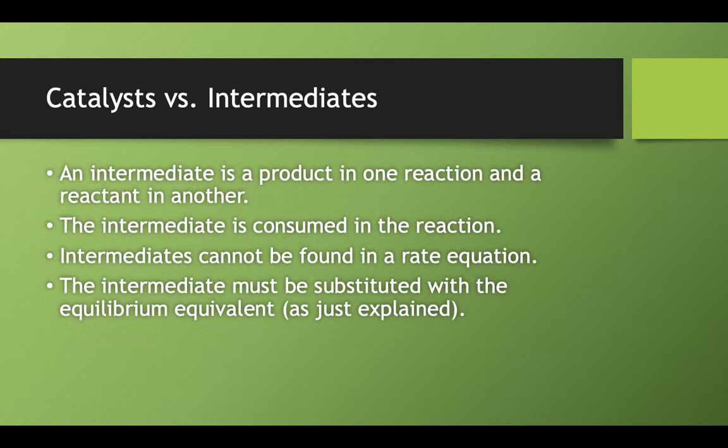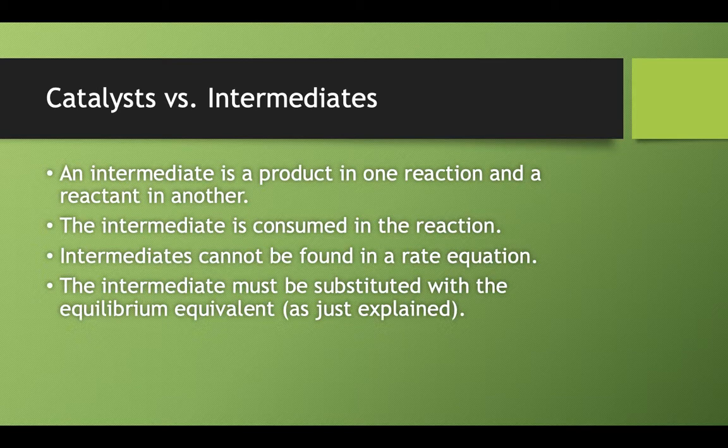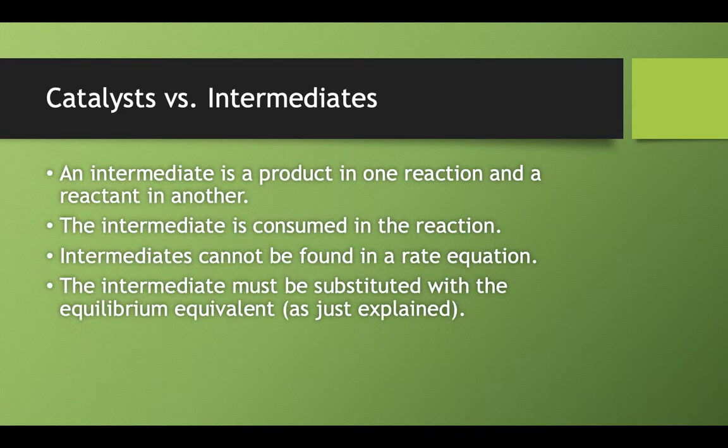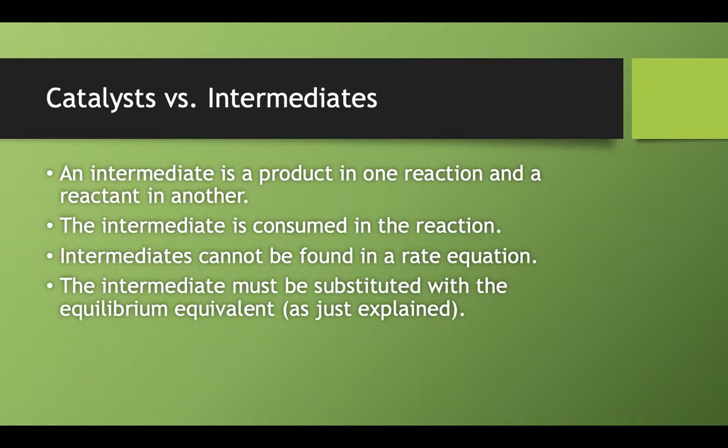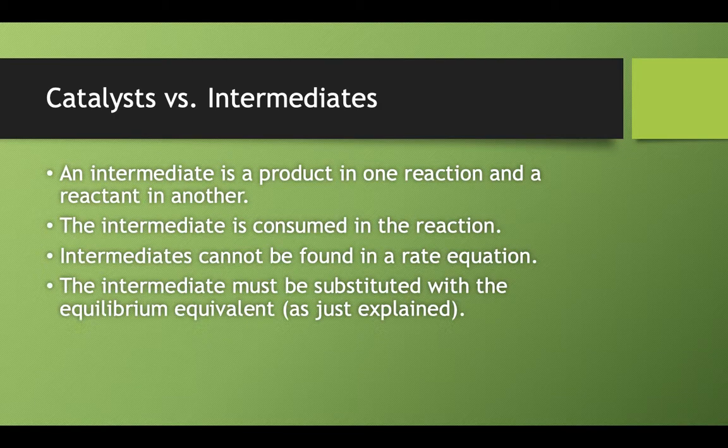Intermediates are consumed in a reaction. They do get used up unlike those catalysts. Intermediates cannot be found in a rate law equation. That's why we had that one example that there was an intermediate in the slow step, that rate determining step, and we could not write the overall rate law equation with an intermediate in it. And we had to do that substituting in an equilibrium expression.